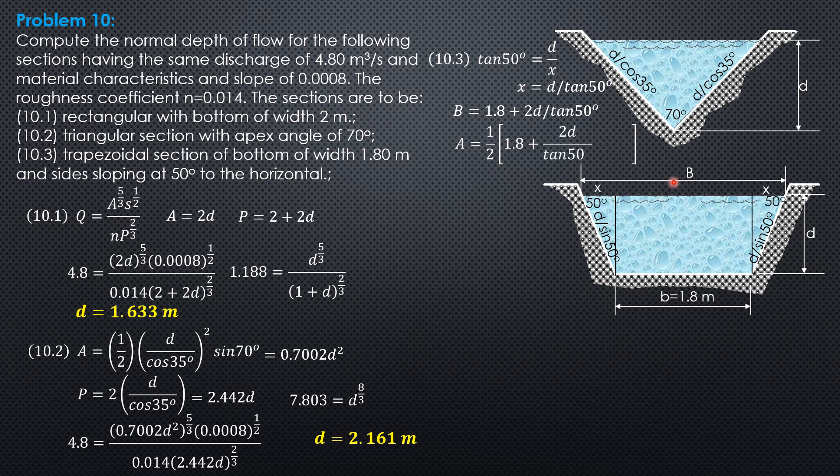The area is 1 half of top width 1.8 plus 2D over tangent 50, bottom width 1.8 times depth. Simplifying, area is 1.8D plus 0.8391D square. While the perimeter is 1.8 plus 2 times D over sin 50. In decimal, 1.8 plus 2.611 D.